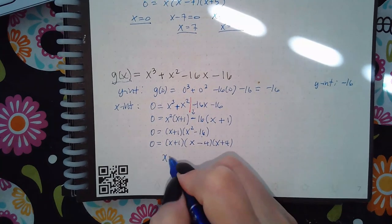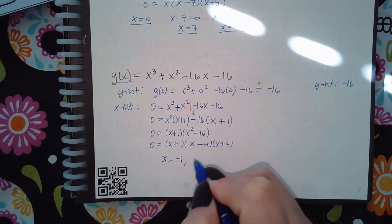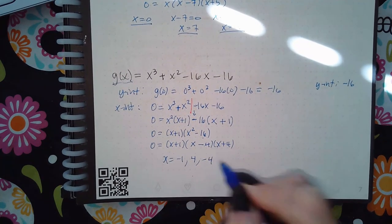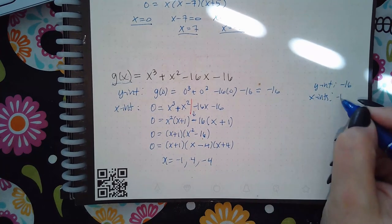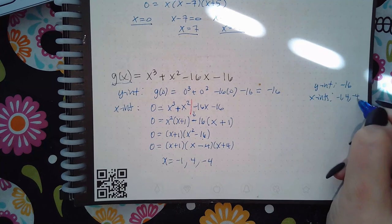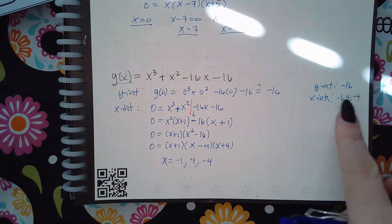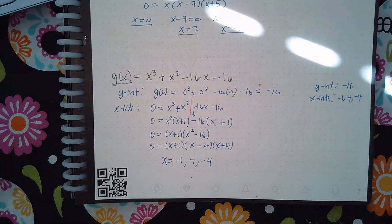So what are the x-intercepts? They are negative 1, positive 4, and negative 4. It doesn't matter the order in which you put these in, as long as all three are there.